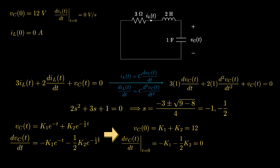Evaluating both expressions at t equals zero: VC(0) equals K1 plus K2, and the derivative of VC at t equals zero equals negative K1 minus one-half K2.